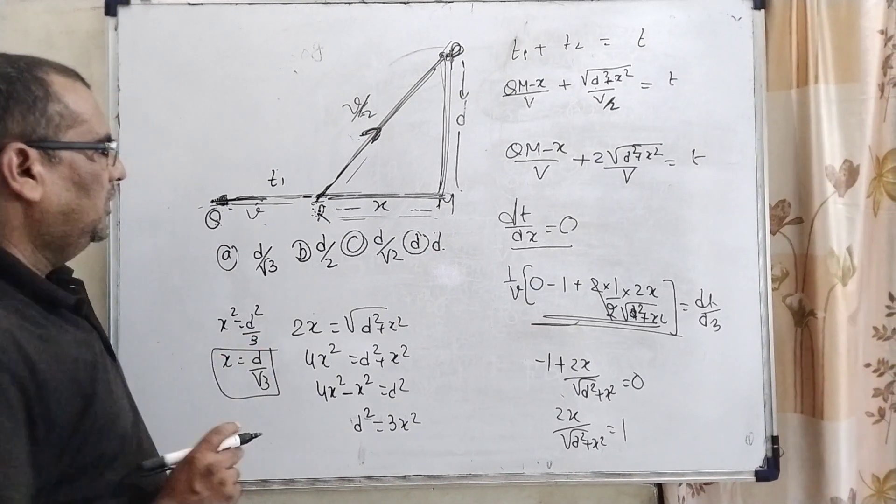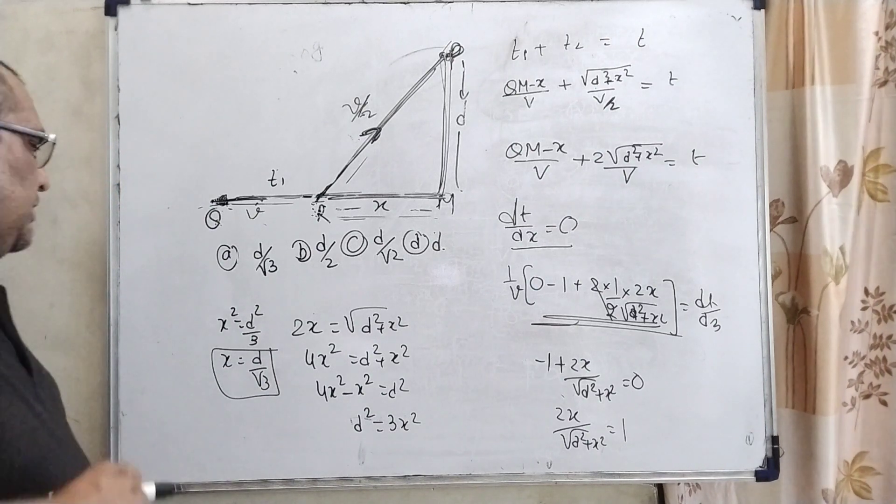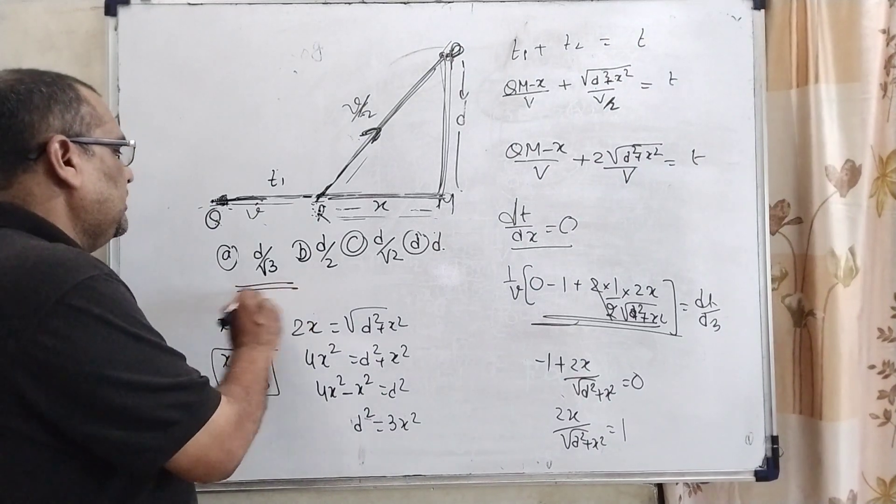Then x square equals D square by 3, so x equals D by root 3. So here, D by root 3, we are matching that. The first option is correct.